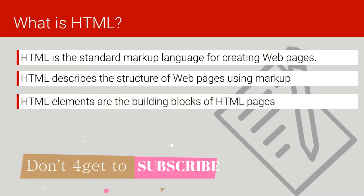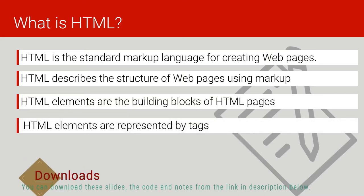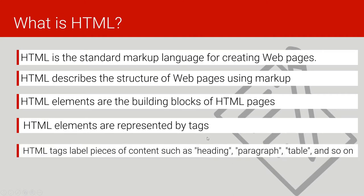HTML elements are the building blocks of HTML pages, and they are represented by tags. When we write HTML, we shall be using tags. HTML tags label pieces of content such as heading, paragraph, table, and others.